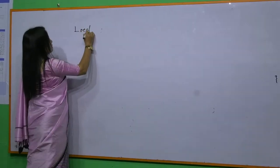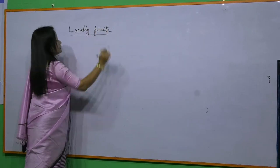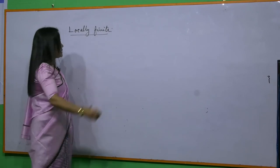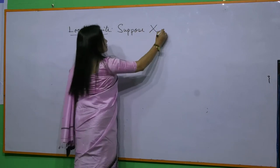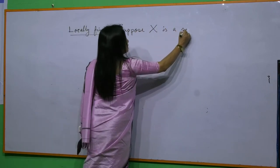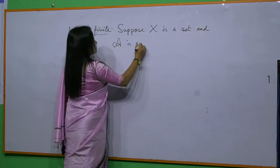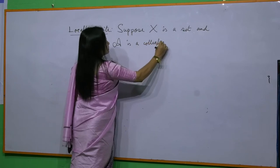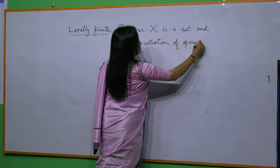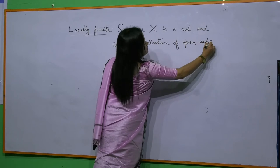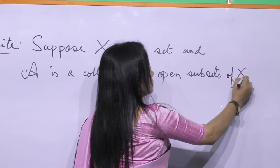Now I define Locally Finite. For this, we take a set. Suppose X is a set and A is a collection of open subsets of X.